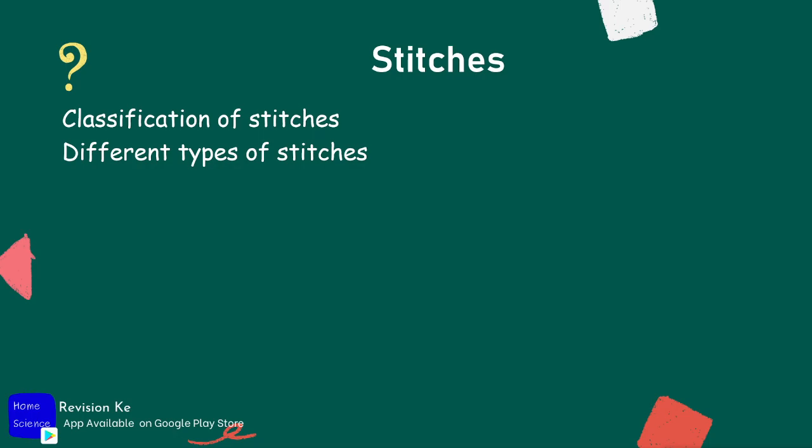Our next objective will be to work out different types of stitches, and that way we will have achieved the objectives of this topic. Make sure you check the description of this video for the link to the home science notes, available for free from your Google Play Store. See you in our next class.